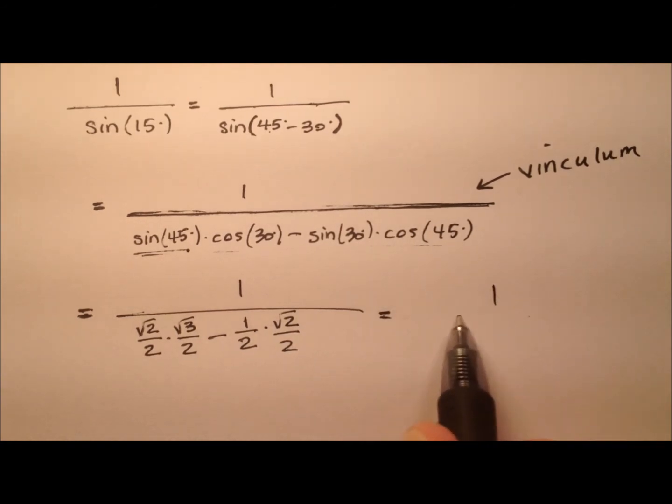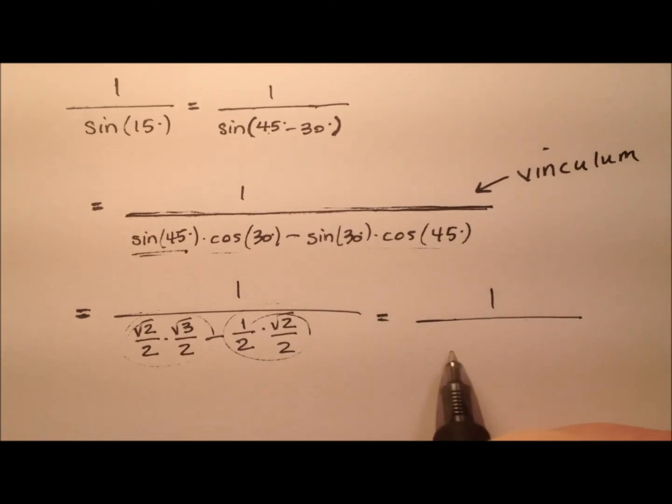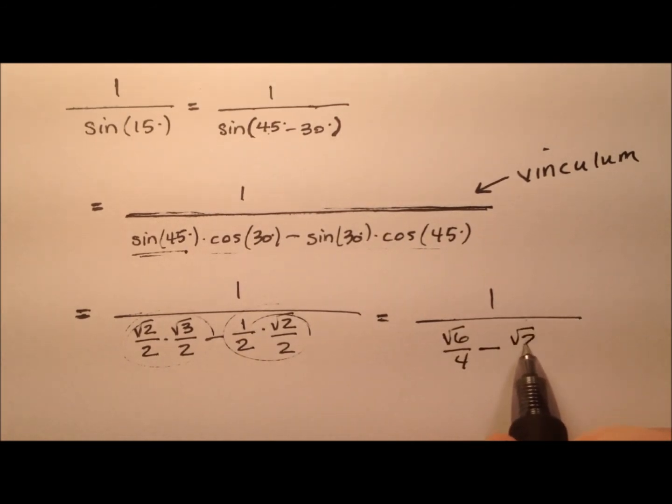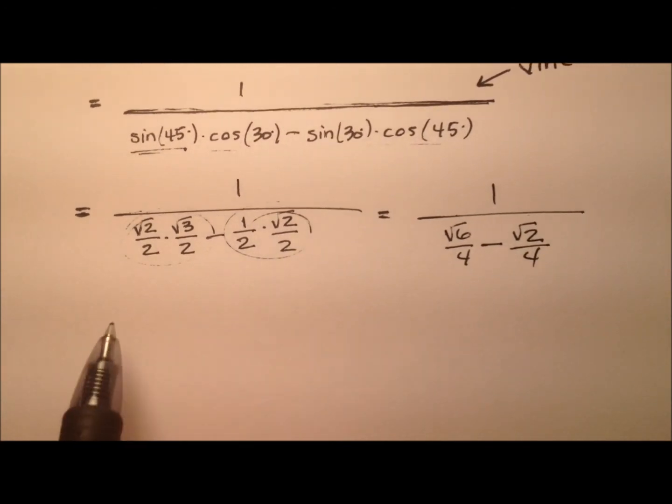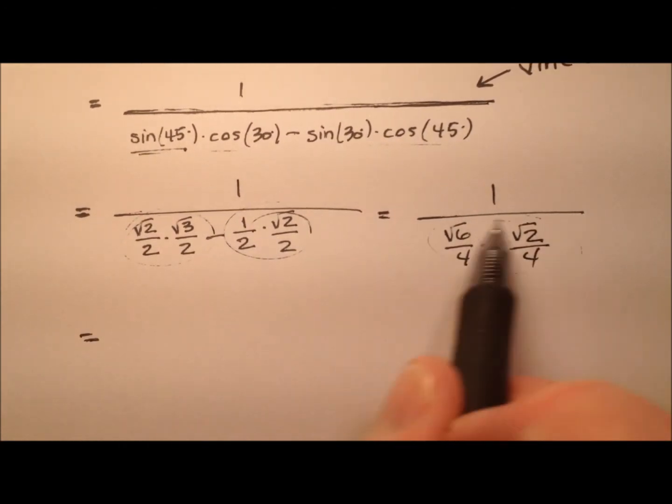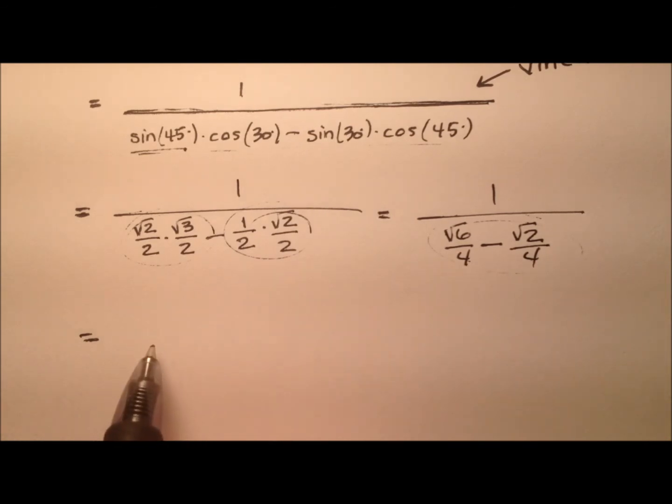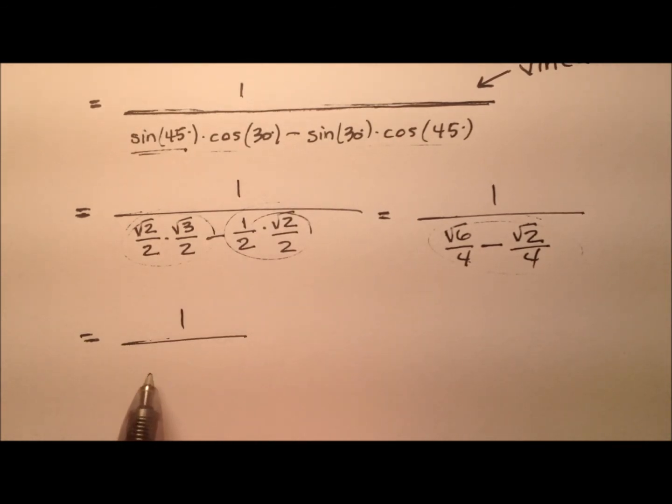Now, when we do this multiplication, we have √6/4 minus √2/4, which we can write with a common denominator of 4: √6 minus √2 all over 4.